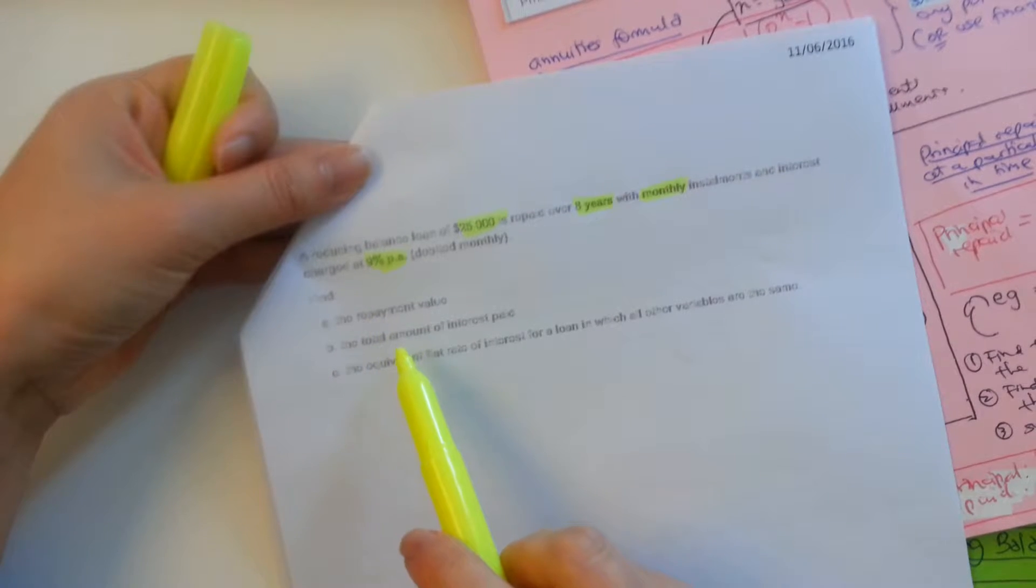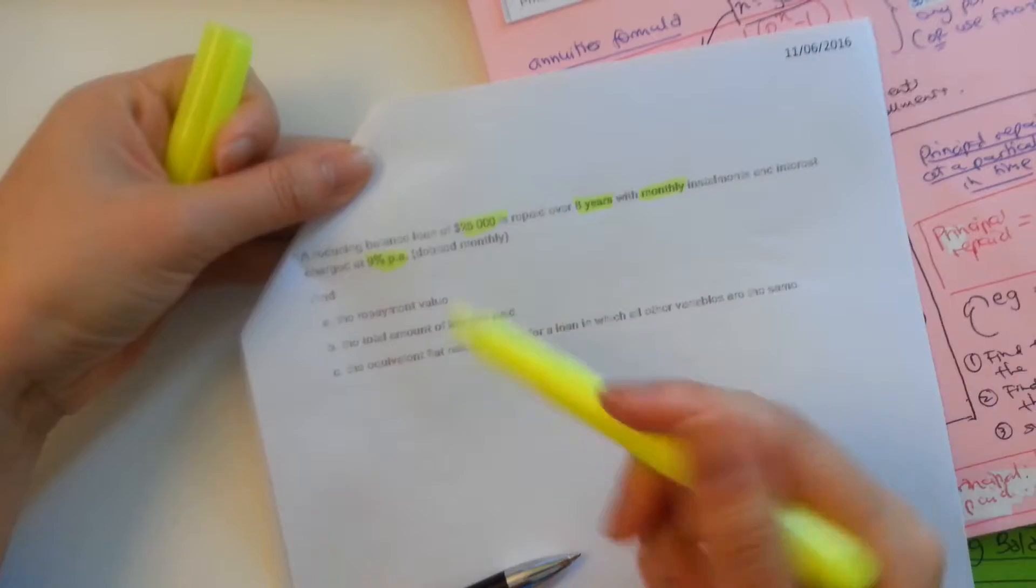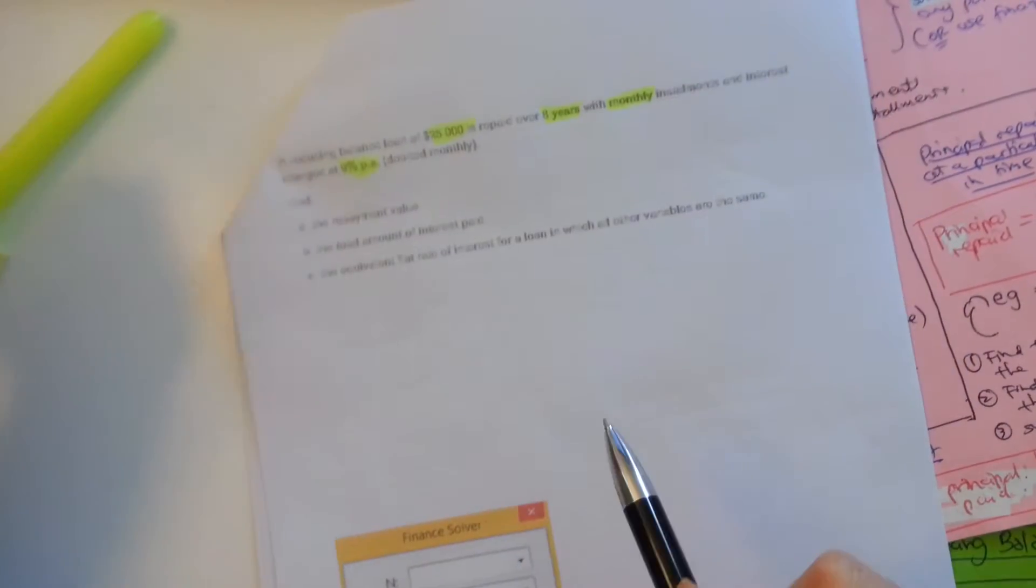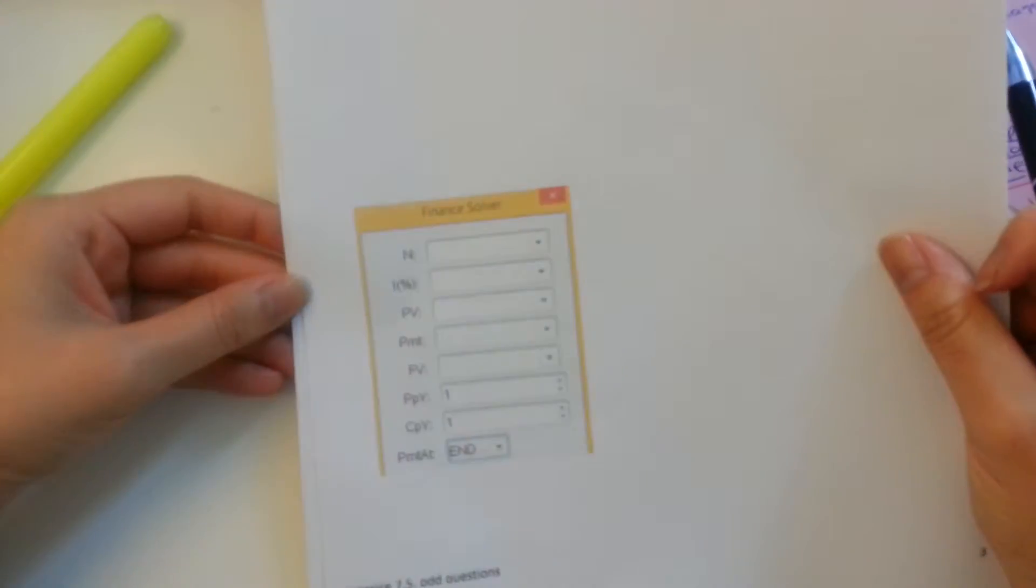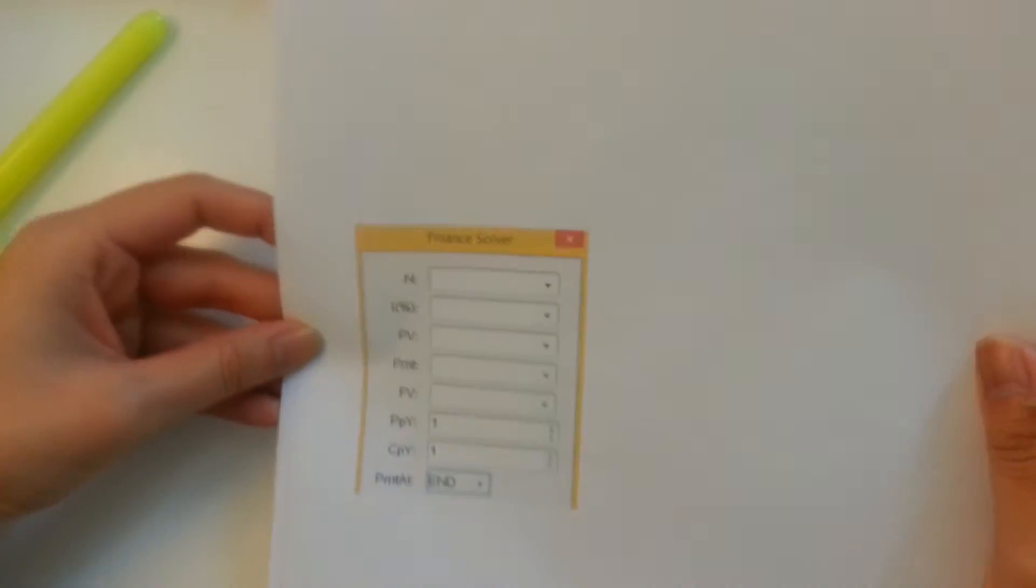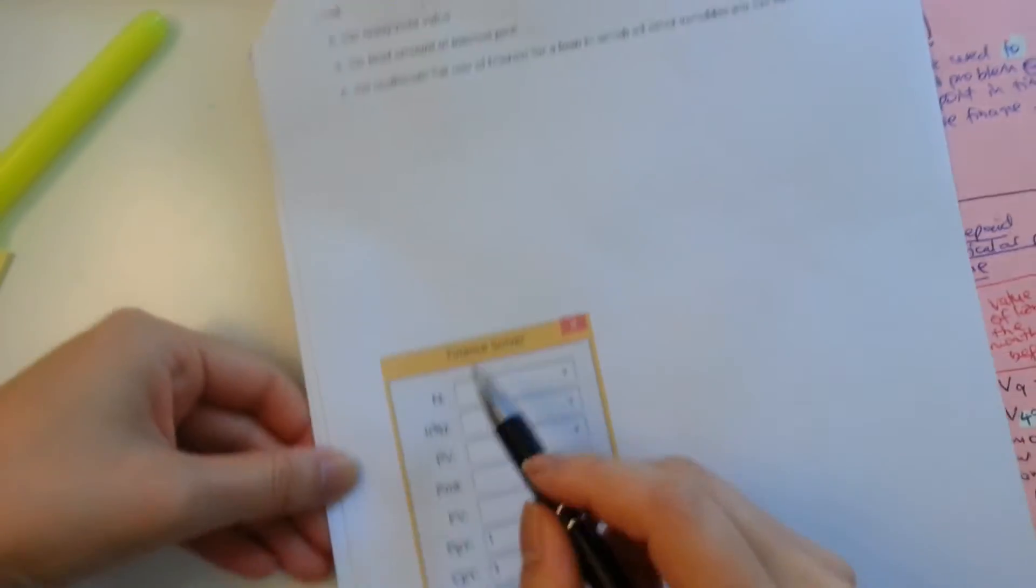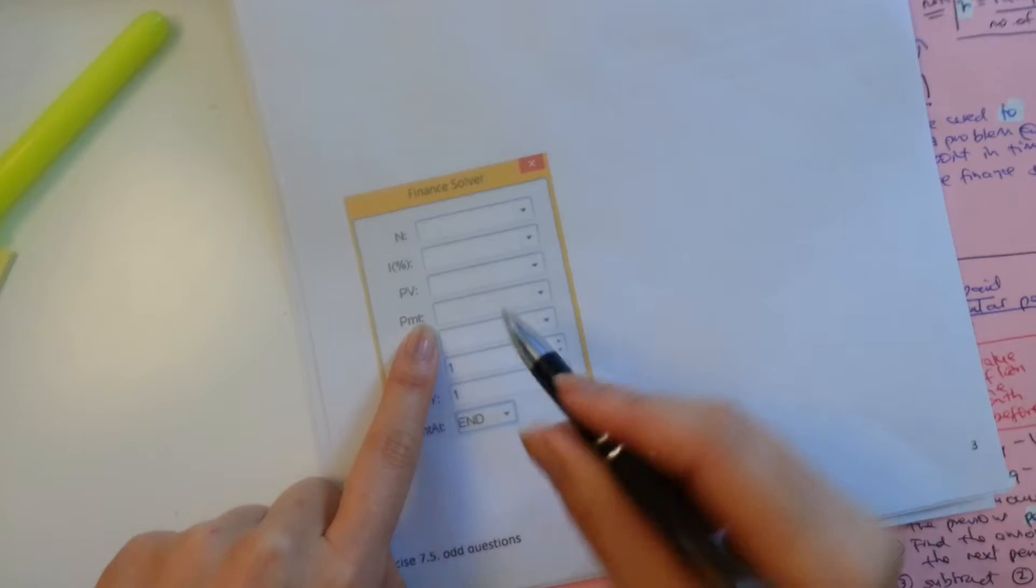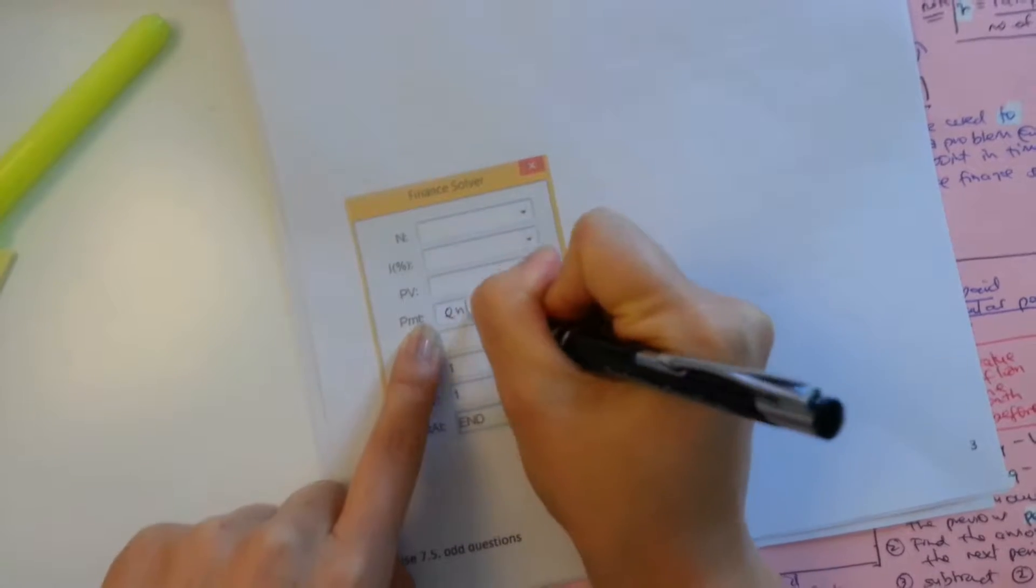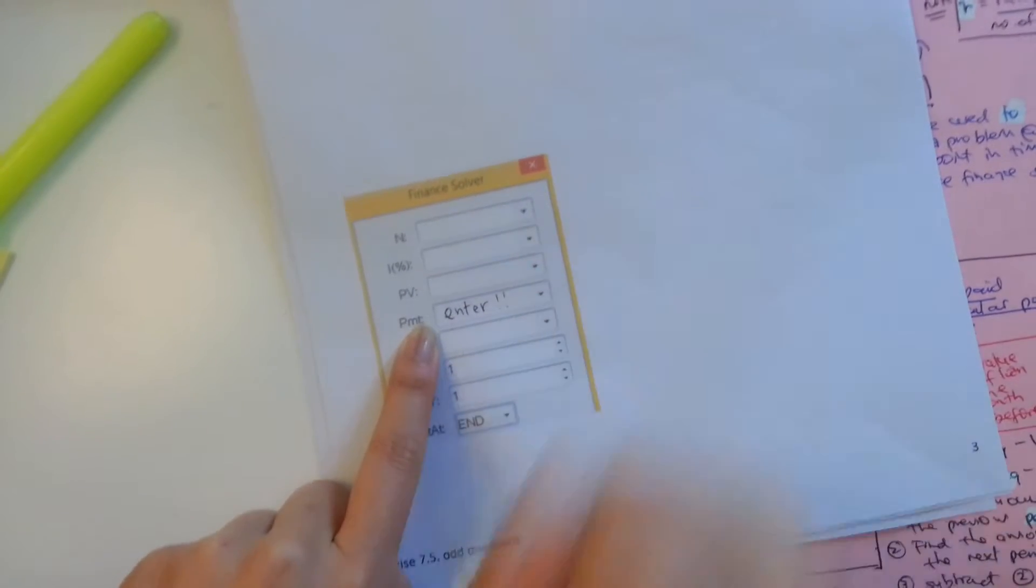It says find the repayment value, total amount of interest paid, and the equivalent flat rate of interest. Let's do each of these one by one. So the repayment value is just going to be found by using our finance solver. So repayment value means that PMT is what we're looking for. So we want to hit enter in this position, and we fill in all the other information.